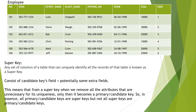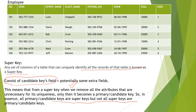Now let's talk about the super key. As per definition, any set of columns of a database that can uniquely identify all the records of the table is known as a super key. Basically, a super key consists of a candidate key plus potentially some extra fields. Some super keys, when we remove all attributes that are unnecessary for uniqueness, will become a primary or candidate key. In essence, all primary and candidate keys are super keys, but not all super keys are primary or candidate keys. Let's discuss how to calculate super keys.